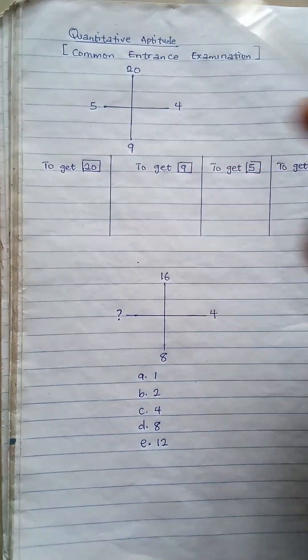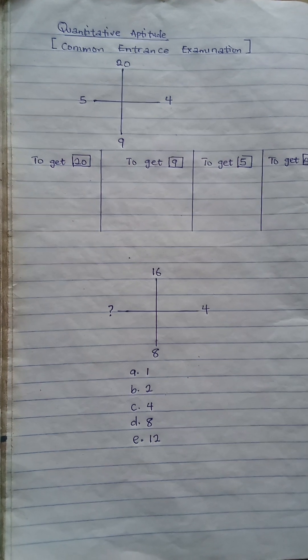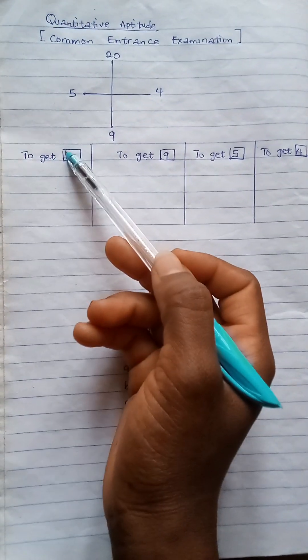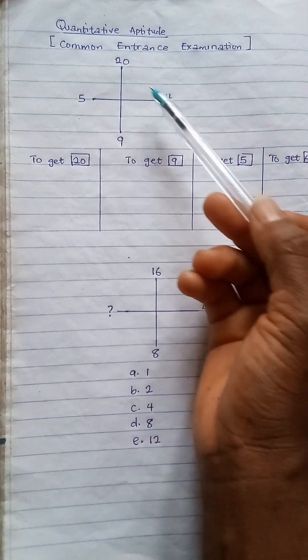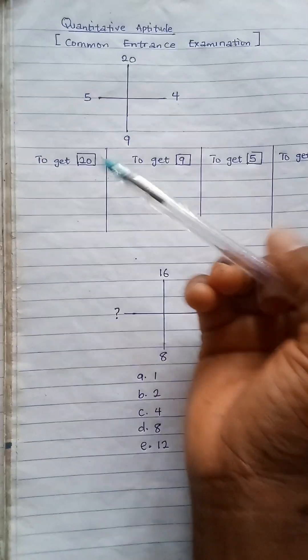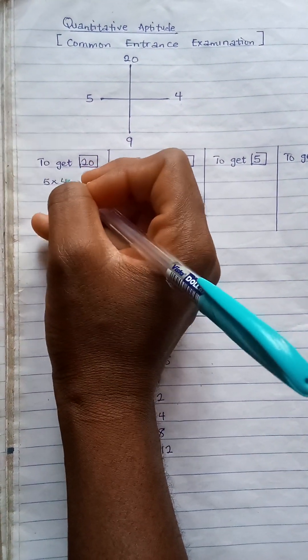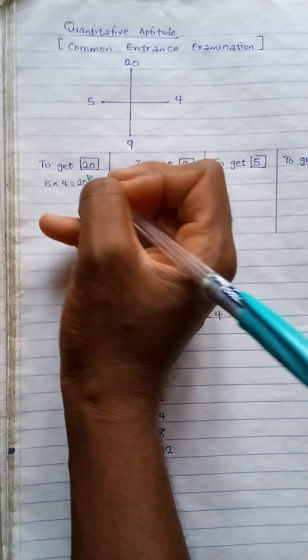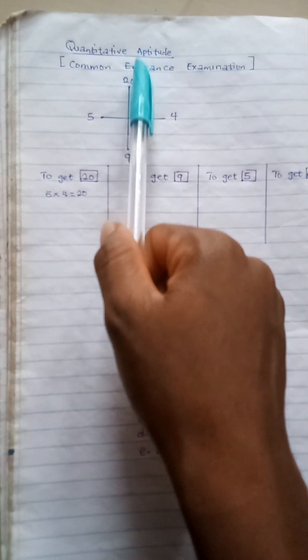I will start with to get 20. For you to get 20, all you need to do is say 5 multiplied by 4. So 5 multiplied by 4 will give us 20, and that is how we got this 20 here. That's how we get that.